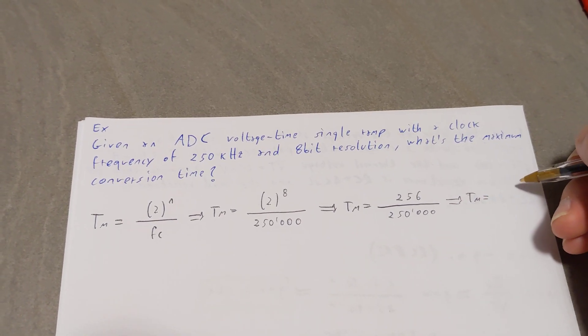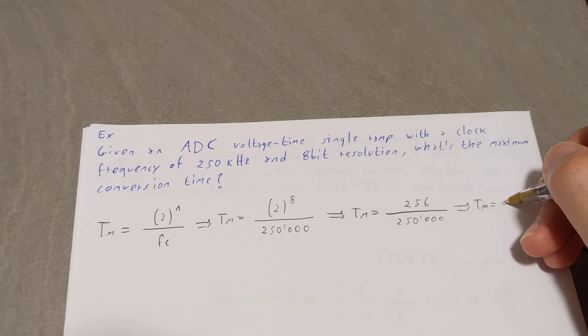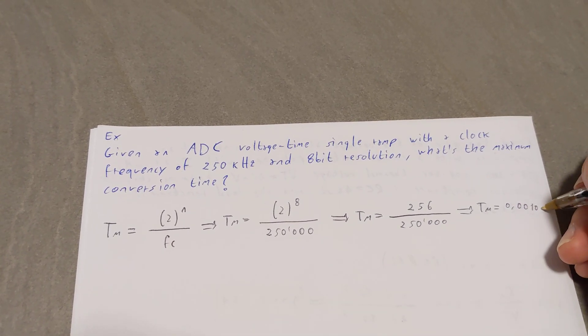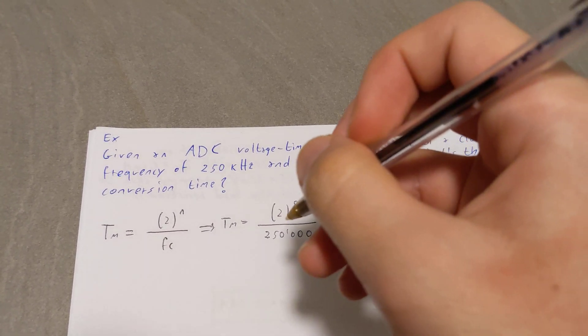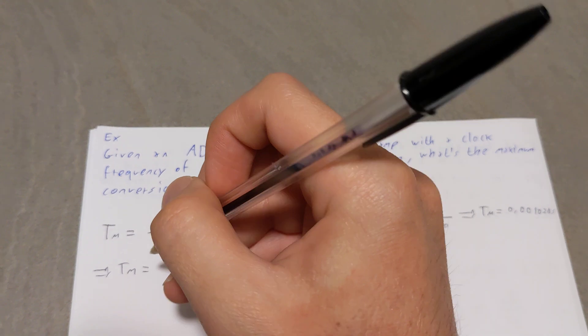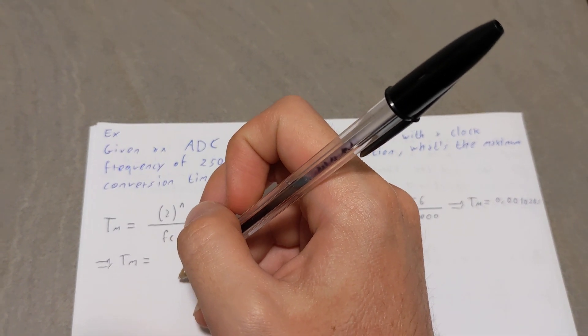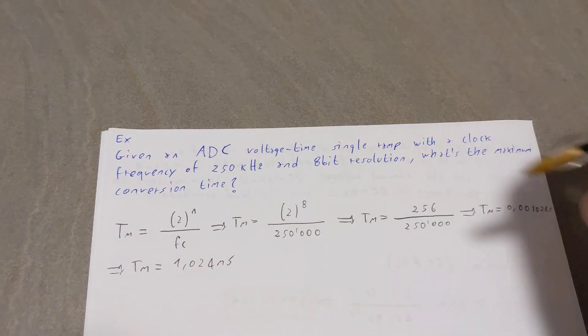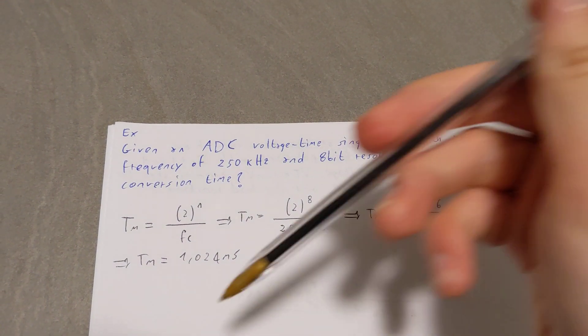Therefore, tm is equal to 0.001024 seconds, which is essentially 1.024 milliseconds. And this is our final answer.